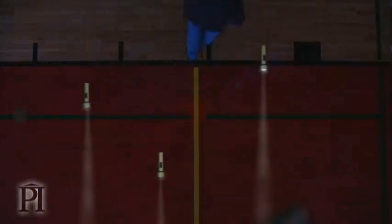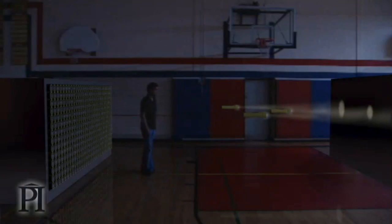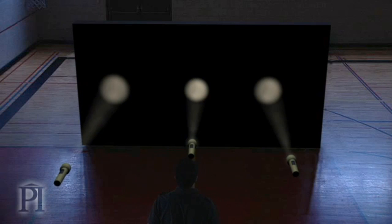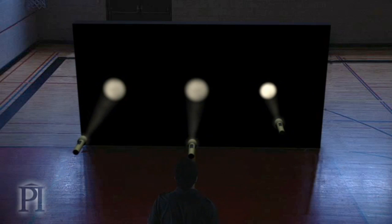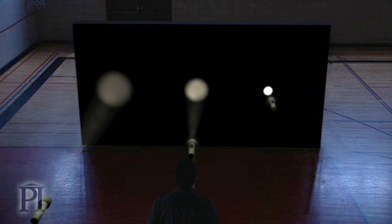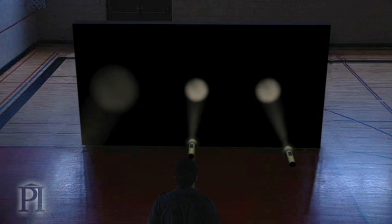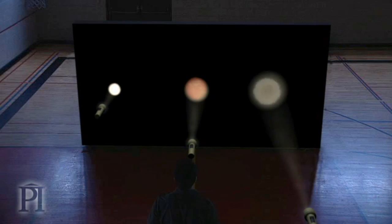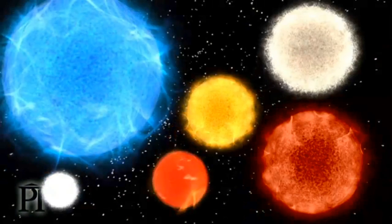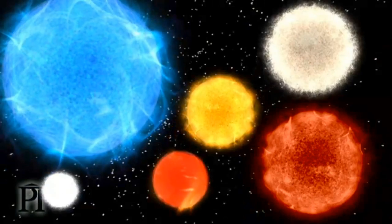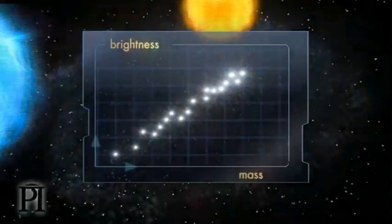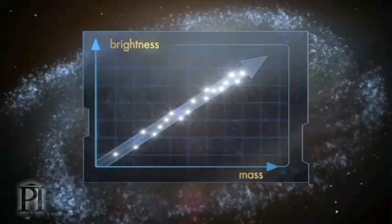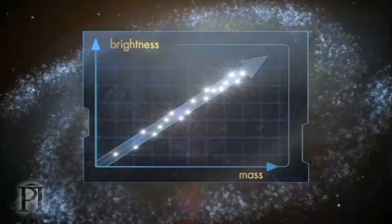When a galaxy, or a flashlight, is farther away than another one, it only appears less bright. So scientists can determine the actual brightness of a galaxy if they know how far away it is. The second problem is that, unlike these flashlights, not all stars are identical. Fortunately, there's a relationship between a star's brightness and its mass that helps account for the different types of stars found in galaxies.